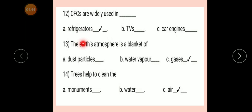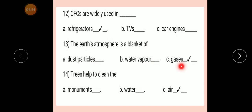Question number 13: The Earth's atmosphere is a blanket of? Option A: Dust particles. Option B: Water vapor. Option C: Gases. Correct answer: Gases. The Earth's atmosphere is a blanket of gases.